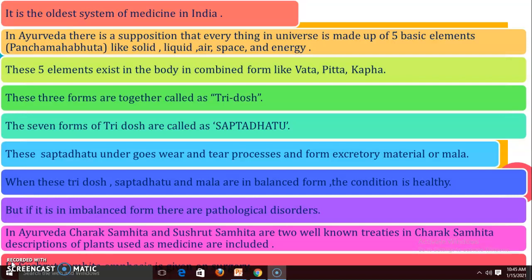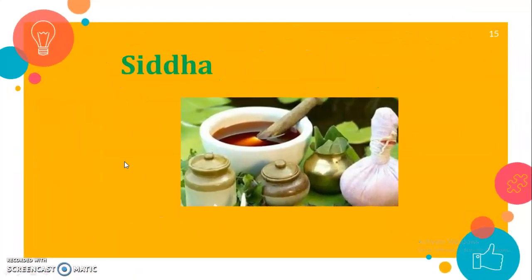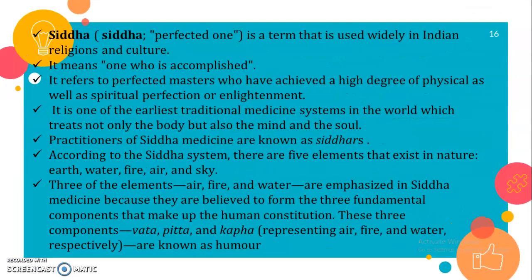Ayurveda encompasses knowledge of Kaya Chikitsha, Komaribhri Dhatra Chikitsha, Shalakya Tantra (ophthalmology), Agada Tantra, Shalya Tantra, Rasayana Tantra, etc. The next is the Siddha system of medicine. The term Siddha means achievement, and Siddhas are saintly personalities who attained proficiency in medicine through the practice of bhakti and yoga. This is a pre-Vedic system identified with Dravidian culture. Like Ayurveda, Siddha believes all objects in the universe are made up of five basic elements: earth, water, sky, fire, and air. The identification of disease is done by pulse reading and color of the body.